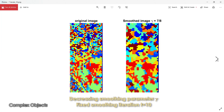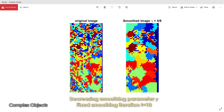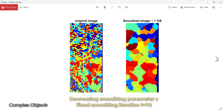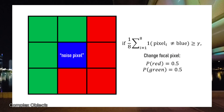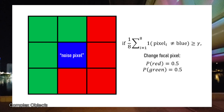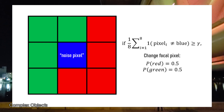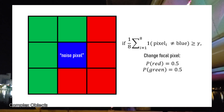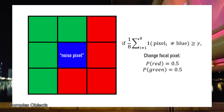When changing a noise pixel's label, you can use a simple majority rule — change it to the label most prominent in the 8 surrounding pixels. What I actually did was sample the new label from the surrounding 8 pixels proportionally to how frequently each label appeared. So if the center was blue and the surrounding pixels were equal parts red and green, I'd give a 50% probability of changing it to red and 50% to green.